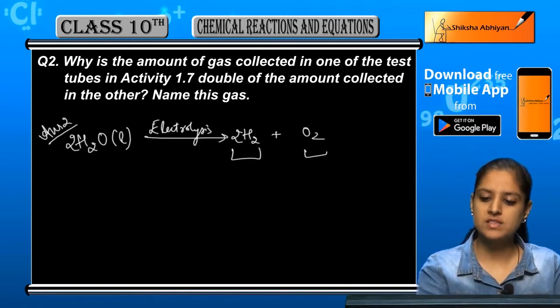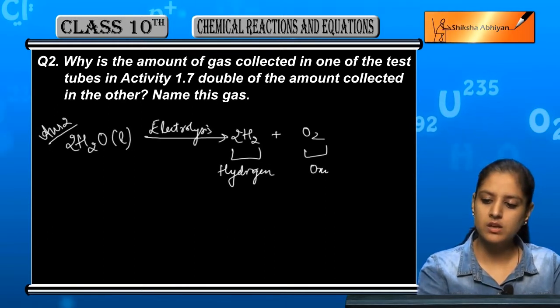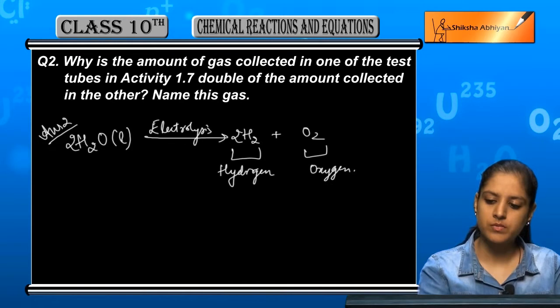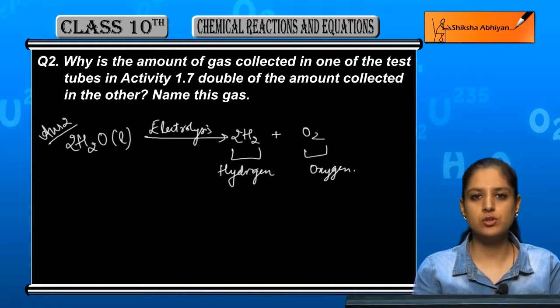So the two gases involved are hydrogen and oxygen. The question here is: in electrolysis, when you have two test tubes, why do you have double gas in one test tube?